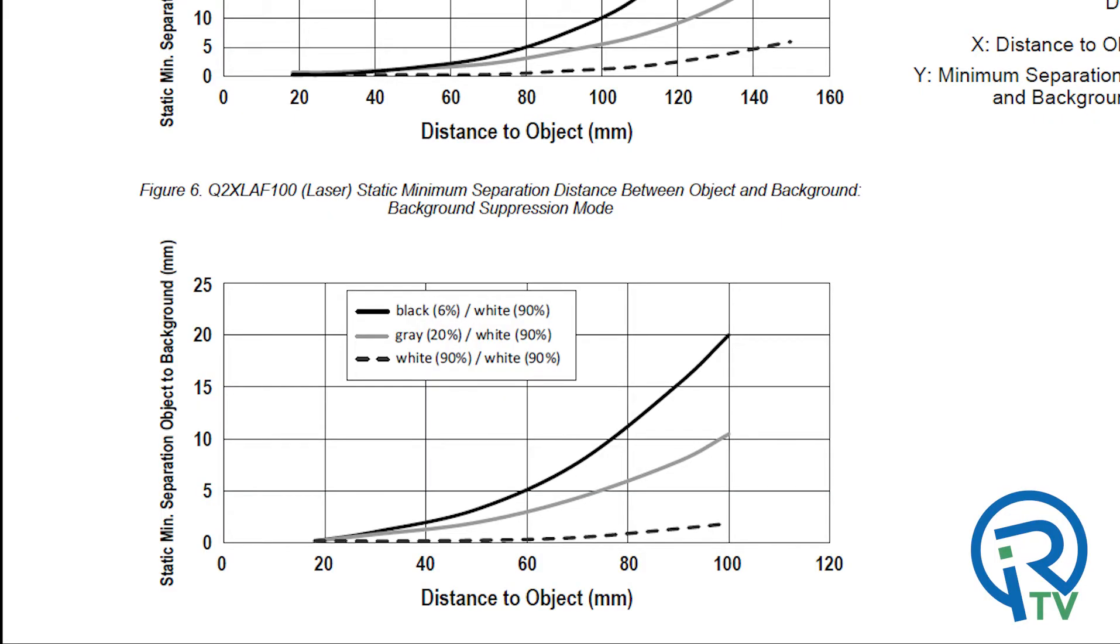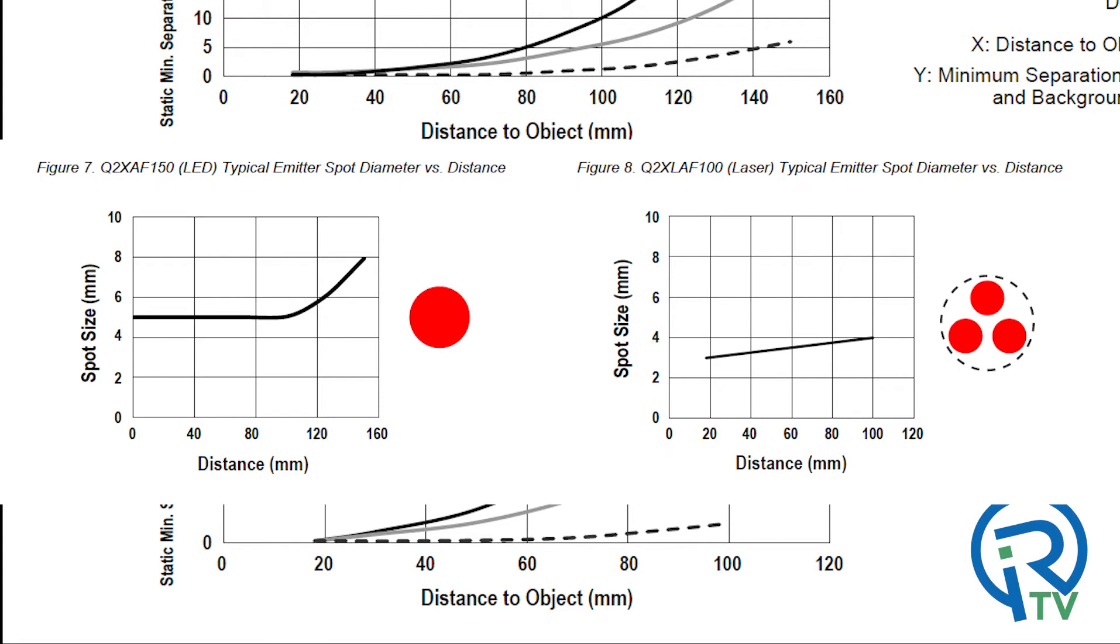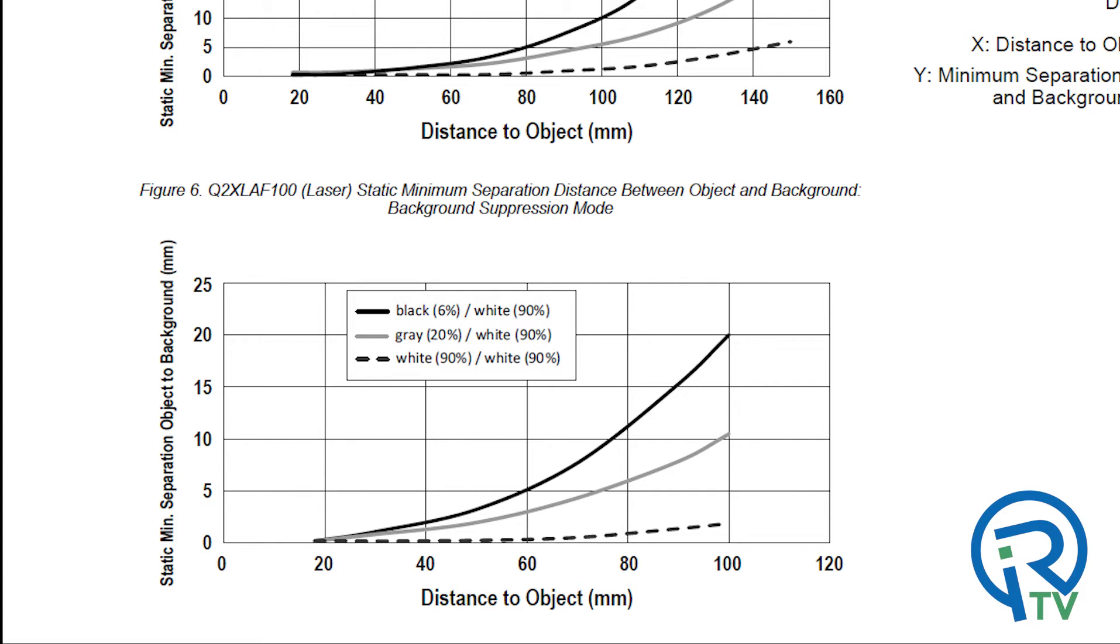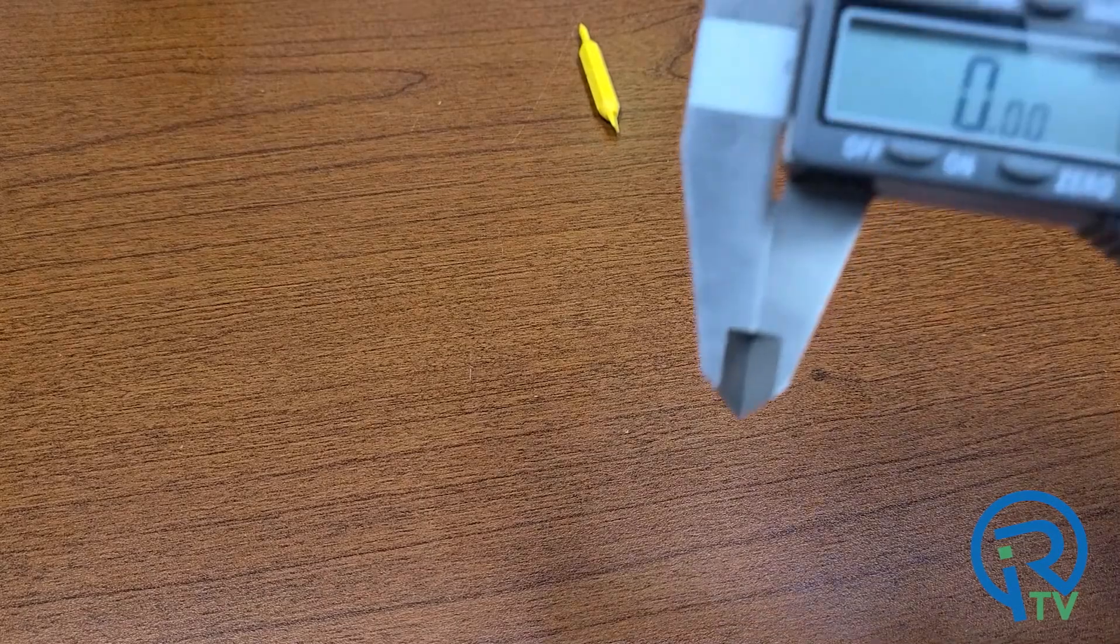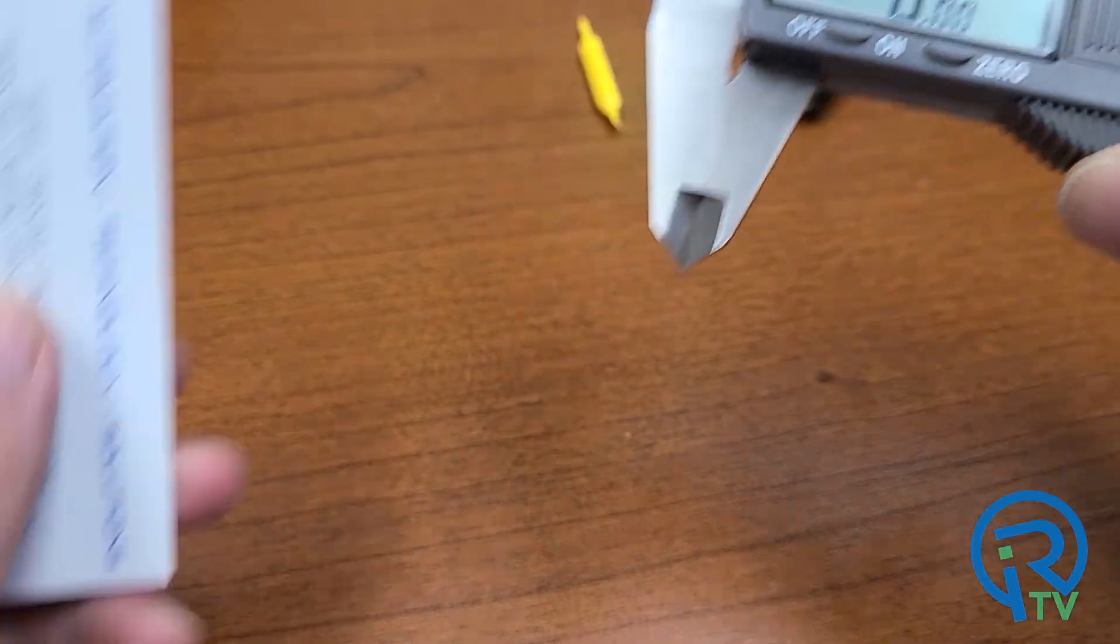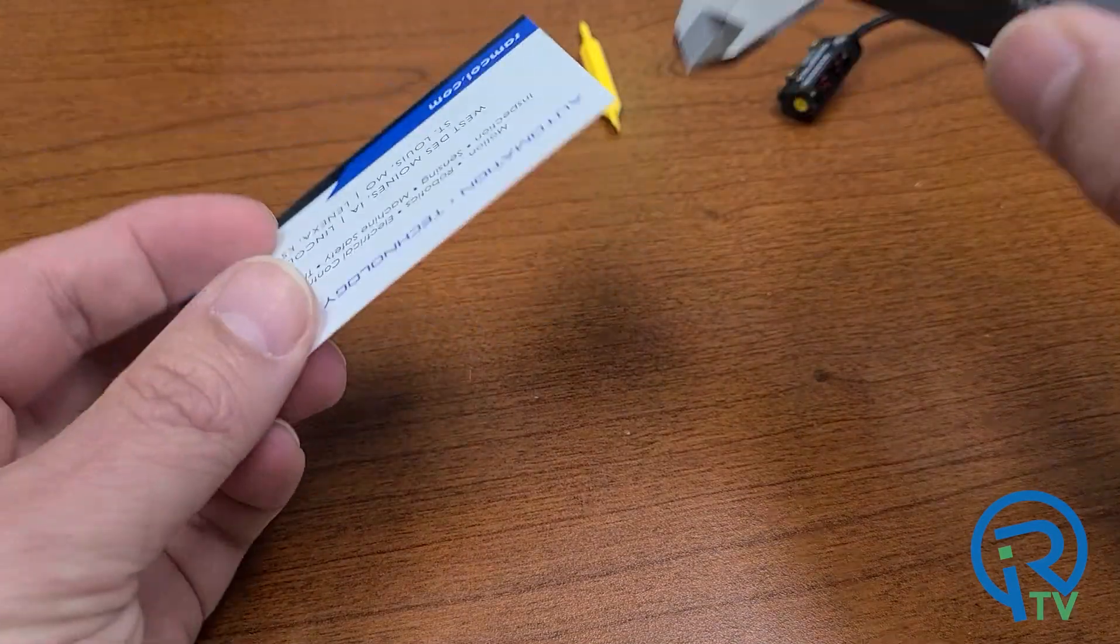Let's take a quick look at the laser version now. The laser version has a smaller spot diameter. The beam is essentially 2 to 4 millimeters depending on the sensing distance. The range is from 20 to 100 millimeters. The performance curves are very similar to the LED version. Let's throw something really challenging at the laser version and let's see what it can do. I have two business cards that are roughly 0.70 millimeters thick.